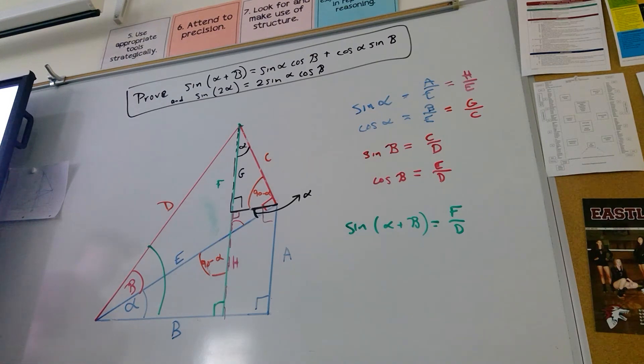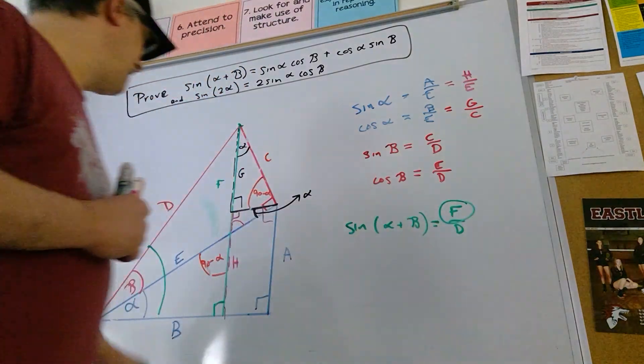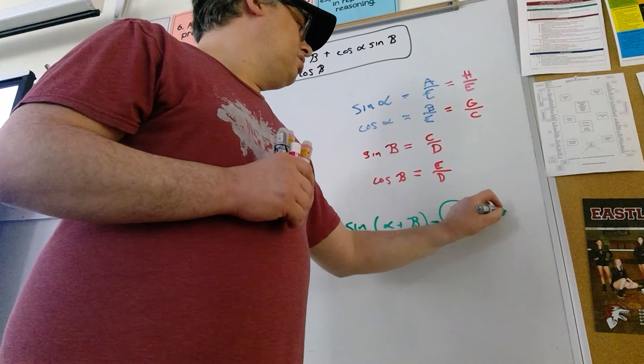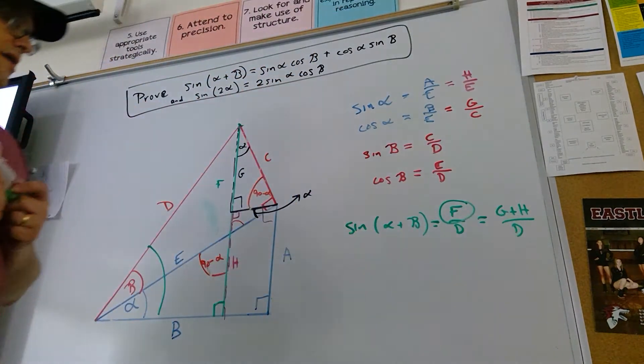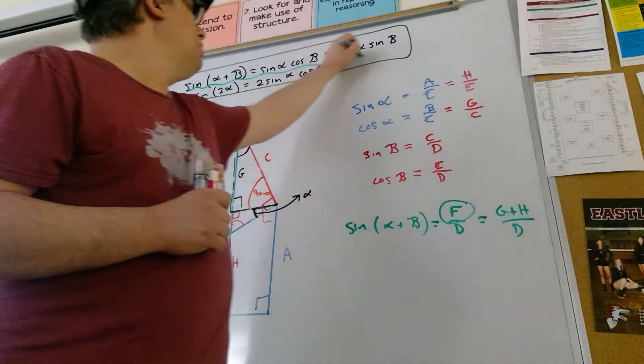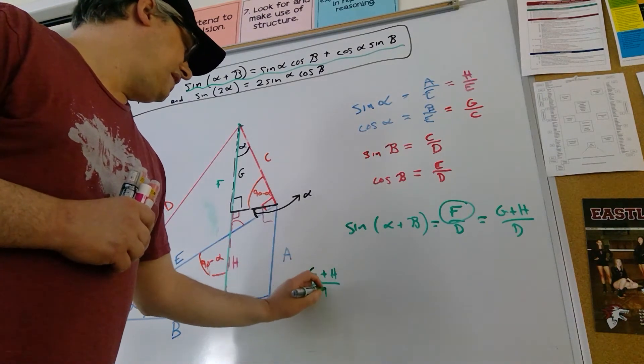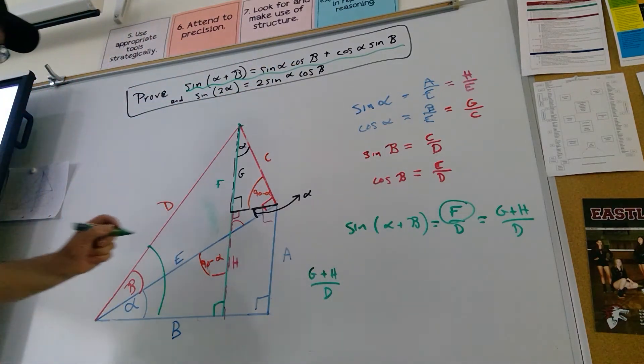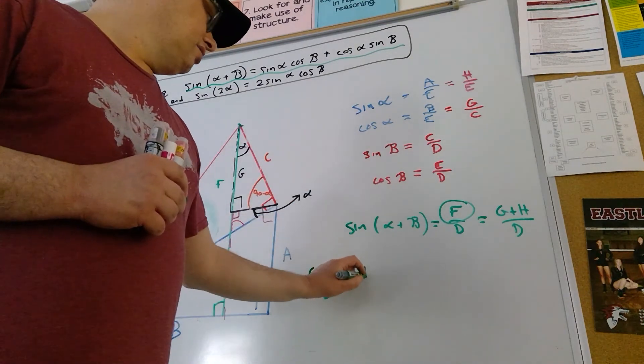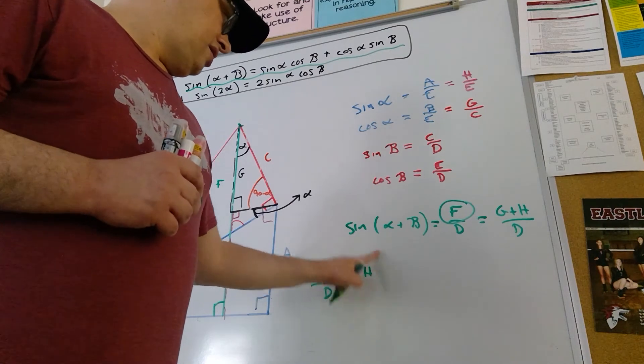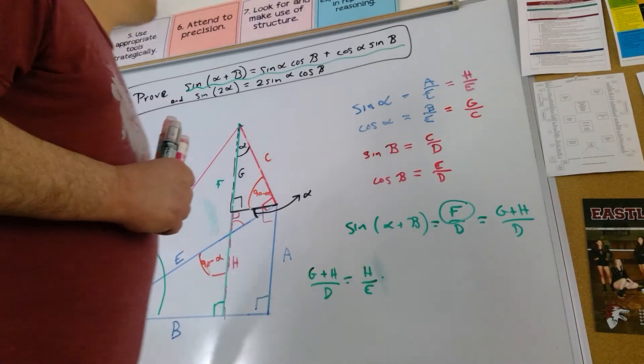All right. With all that preamble done, I think we're ready to go. Look at our goal. We want to prove that the sine of alpha plus beta is sine of alpha cosine of beta plus cosine of alpha times sine of beta. So why don't we see what we can do with this? Because I have decomposed F into, right? F is the same thing as G plus H. Now, let's write this out. If this statement is true, then it must be the case that G plus H over D is the same thing as sine of alpha times cosine of beta. Let's write that sine of alpha is H over E times cosine of beta.